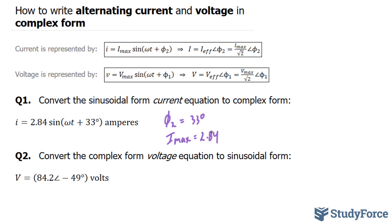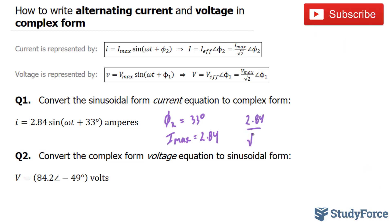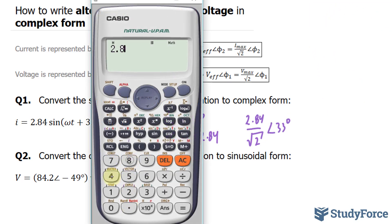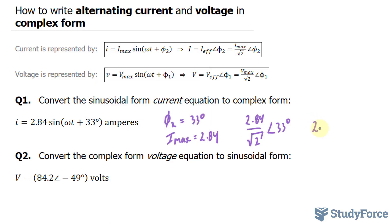All we have to do now is put this together where we have 2.84 over the square root of 2 at an angle of 33 degrees. Let's find out what 2.84 divided by the square root of 2 is equal to. That gives us approximately 2.01. So we have 2.01 at an angle of 33 degrees, and this is in amps.